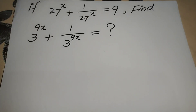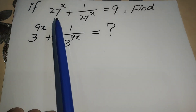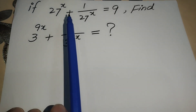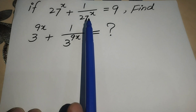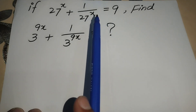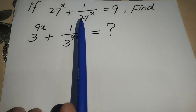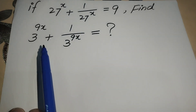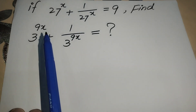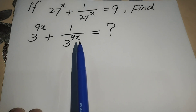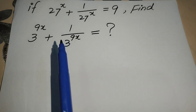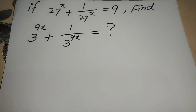Hello everyone, welcome to the Map of Mathematics. Today I will find the solution to an interesting problem: if 27^x + 1/27^x = 9, then we will use this to find the solution of 3^(9x) + 1/3^(9x).